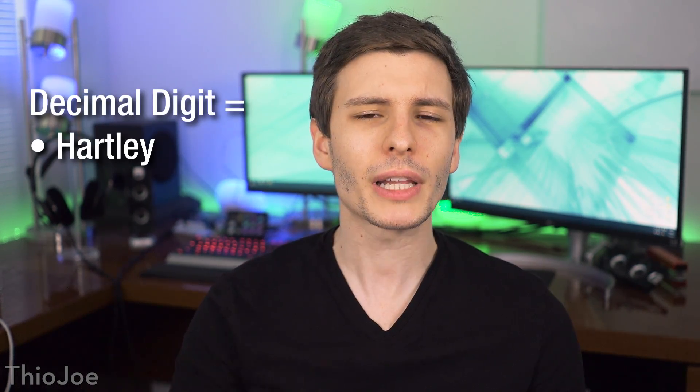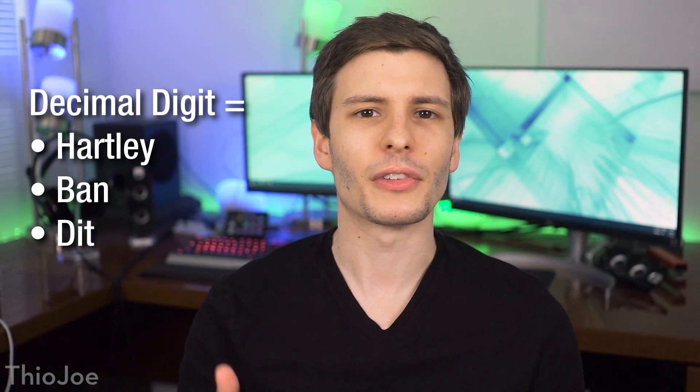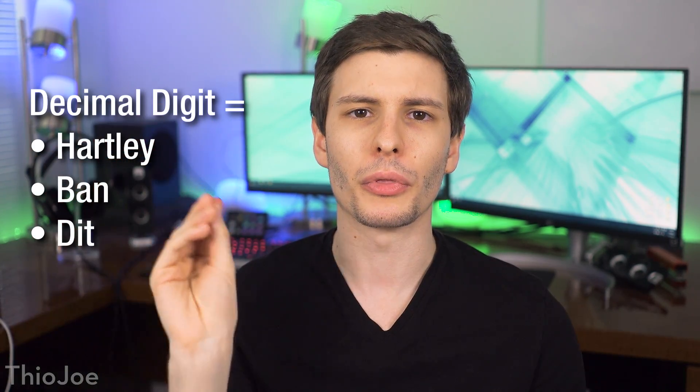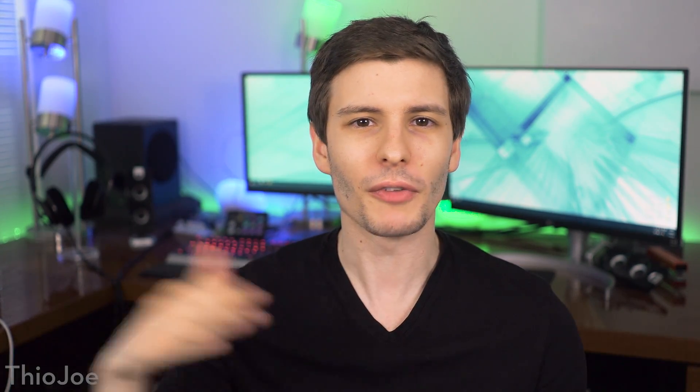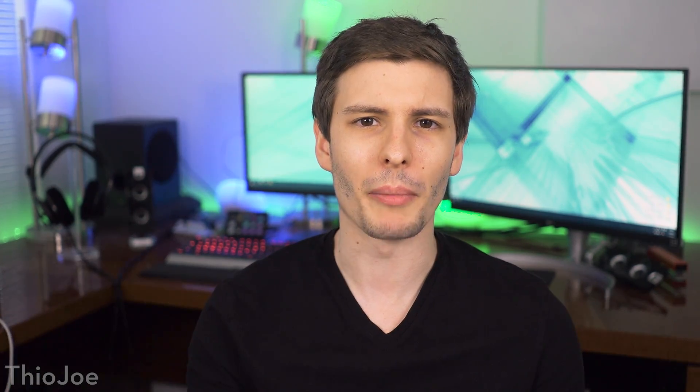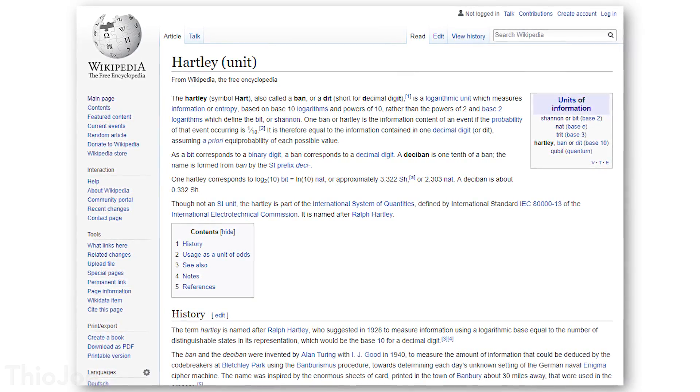But what about other base systems? This is actually where it gets pretty interesting. But before we get into those, you may be surprised to know that there are actually other names for decimal digits that you've probably never heard of. These examples are the Hartley, the Ban, and the Dit. Yes, these are the same exact things as a decimal digit, which is just one spot with a possibility of 10 different numbers, 0 through 9. It's not referring to the actual numbers 0 through 9, just that spot which can take up one of those 10. We're not going to get into the purpose of all these different terms. That would take an entire video, but you can go on Wikipedia and look up the Hartley and read all about it if you want.